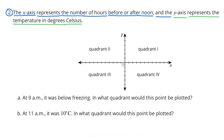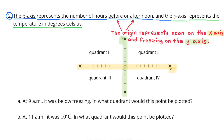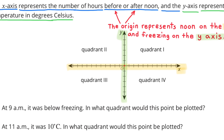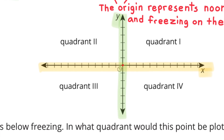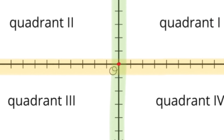Number 2. The x-axis represents the number of hours before or after noon, and the y-axis represents the temperature in degrees Celsius. This means the origin represents noon on the x-axis and freezing on the y-axis. Remember that the origin is your starting point — it's where the horizontal axis and the vertical axis intersect.